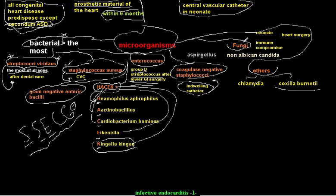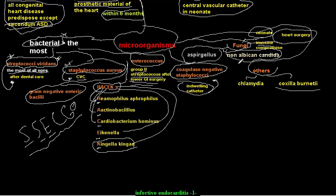Fungal endocarditis mostly occurs in neonates, immunocompromised patients, or after heart surgery. Fungi that can cause infective endocarditis include Aspergillus and non-albicans Candida. Chlamydia and Coxiella burnetti are examples of microorganisms other than bacteria and fungi that can cause infective endocarditis.